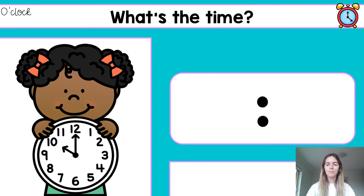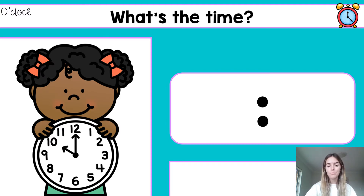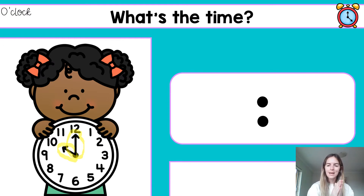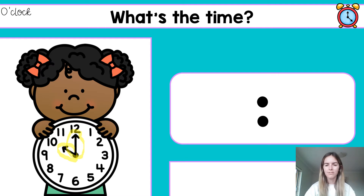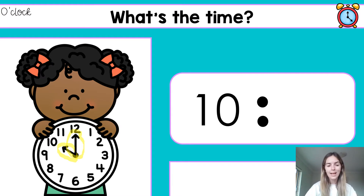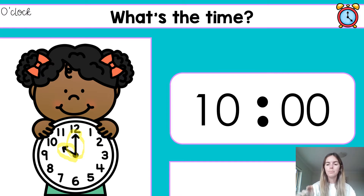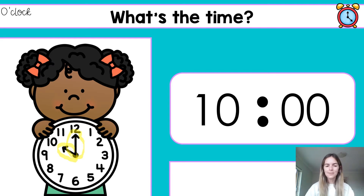Now I want you to look at this. Remember last term in term three we looked at time — we looked at o'clock. We learned that when the big hand is always on the twelve it is going to be o'clock, and when the small hand is on any of the numbers, that's the number we say first — so it'll be something o'clock. When we write that as digital time, I've got my two dots here. My small hand is pointing to the ten, then I put my two zeros. So the time here is ten o'clock.